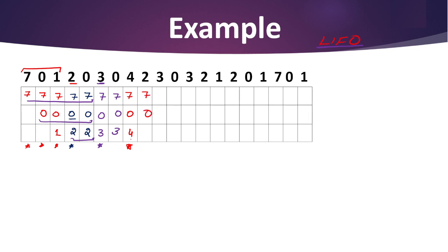Next value is 2. 7 and 0 are already there. The last value entered is 4, so we replace 4 with 2 — one more page fault. Next value is 3. 3 is not available. The last value that entered memory is 2, so we replace 2 with 3 — one more page fault.